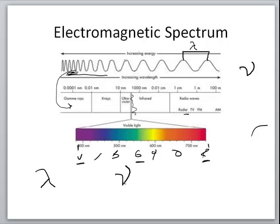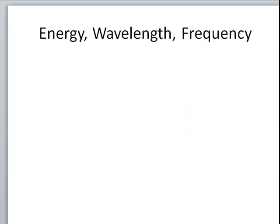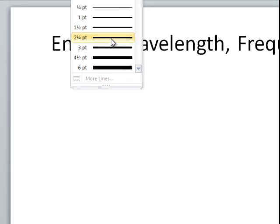The wavelength and the frequency are connected through two equations, and we're also going to talk about the energy of these wavelengths of light. So we've got three variables: lambda, which stands for wavelength; nu, which stands for frequency; and E, which stands for energy.